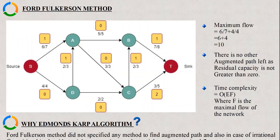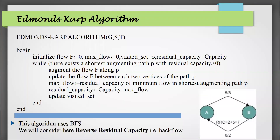Why Edmonds-Karp algorithm? The Ford-Fulkerson method does not specify how to find the augmenting path, and in the case of irrational capacities, it might not terminate and we might not get the maximum flow. Here is the Edmonds-Karp algorithm: initialize maximum flow to 0 and the visited set, residual capacity, and parent set to null. While there exists a shortest path P with residual capacity greater than 0, follow the augmentation process, then terminate.